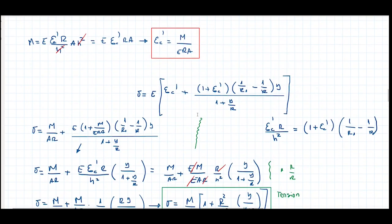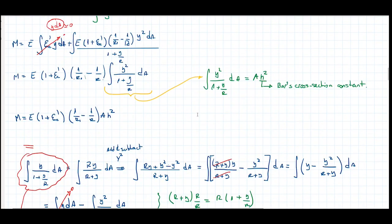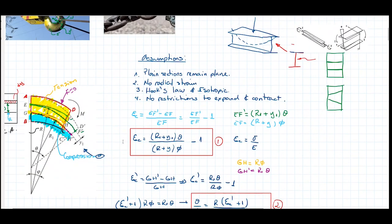All of this came from the four assumptions: plane sections remain plane, no radial strains and therefore no deformation in the radial direction, the material obeys Hooke's law and is isotropic, and fibers can expand and contract without limitations from other fibers.